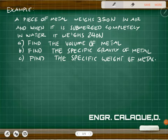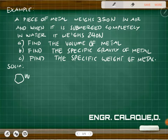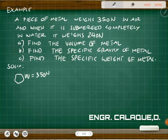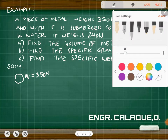Let's solve an example. A piece of metal weighs 350 newtons in air, and when it is submerged completely in water it weighs 240 newtons. So the weight of the piece of metal before placing it in water is 350 N — that's the original weight. The weight in air is 350 N, and we know the weight of air itself is negligible.